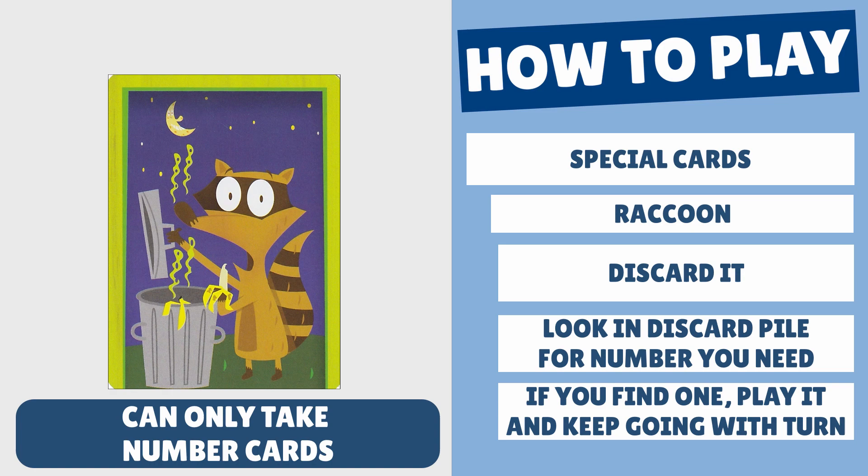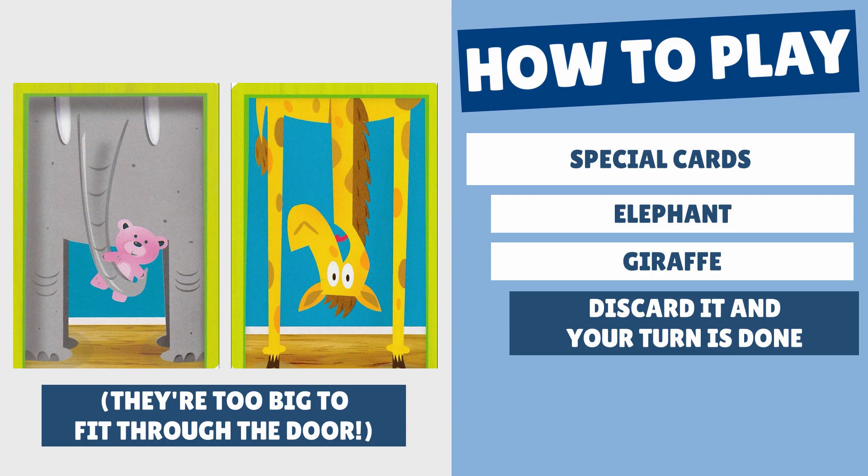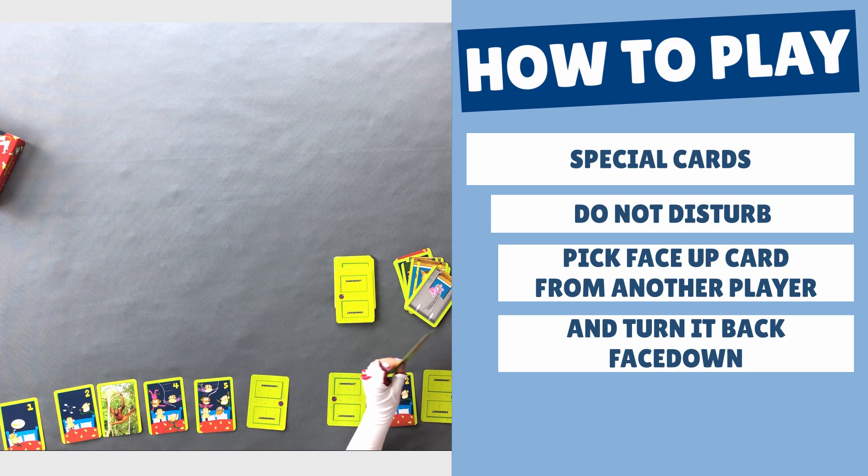If you get an elephant or giraffe card, discard it and your turn is done. Then we have the do not disturb card. If you get this one, you can use it to pick any face-up card in another player's row and turn it back face down. After that, your turn is done.